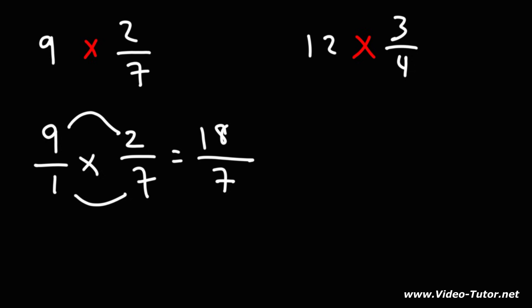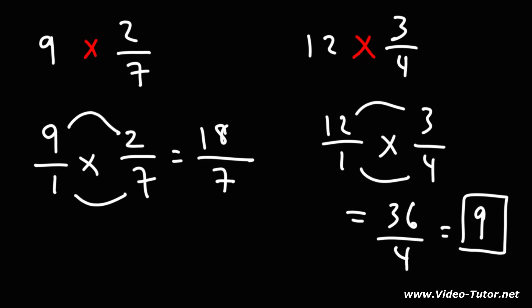Now what about the next one? 12 times 3 over 4. Well, we could do the same thing. We could write this as 12 over 1 times 3 over 4. 12 times 3 is 36. 1 times 4 is 4. And 36 divided by 4 is 9. So that's the answer for the second example.